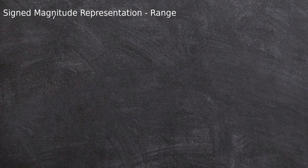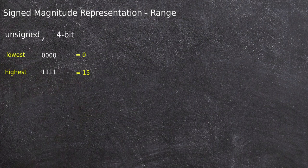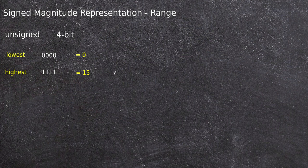Let us today discuss the range of signed magnitude representation. If it is an unsigned number and we use 4-bit representation, then the lowest number possible is 0000, that is 0 in decimal, and the highest number is possible when all the bits are 1, that is equal to 15. So a total of 16 numbers are possible to represent in unsigned 4-bit representation, that is 0 to 15.